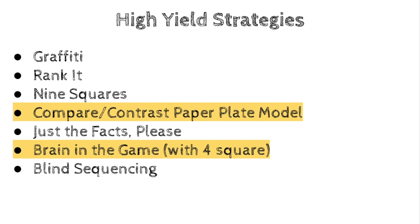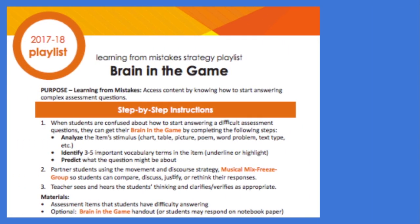Let's take another look at a high yield strategy: Brain in the Game with Four Square. Here we talk about how Brain in the Game works and it gives step-by-step instructions on how you would use this high yield strategy. This is another great way to review for assessments or to go over a test already completed. Divide students into groups and ask them to analyze the question stimulus, identify vocabulary words, and predict what the question might be about. Note, this is about getting your brain ready to solve the problem, not actually solving anything.